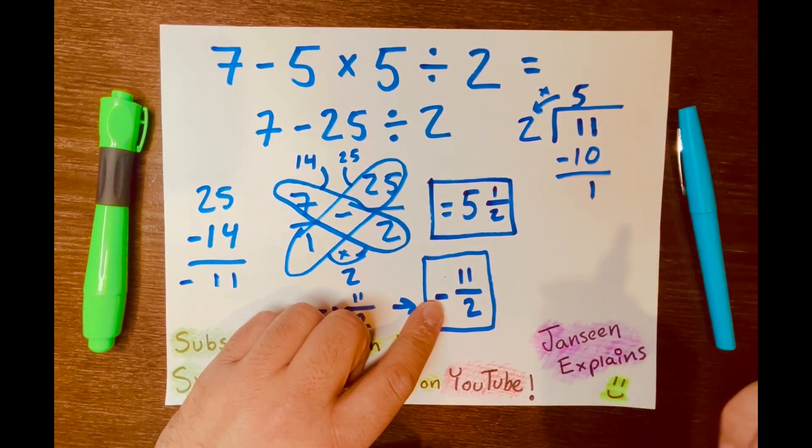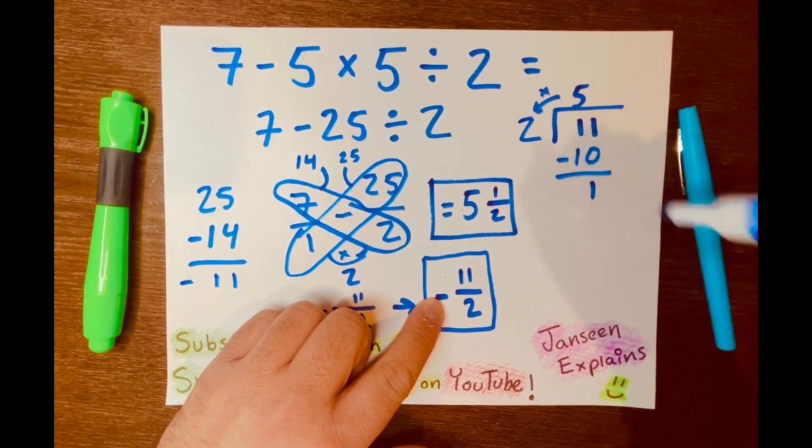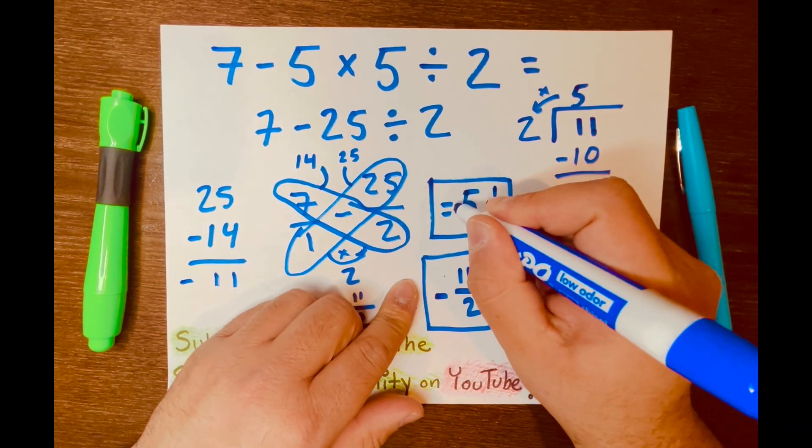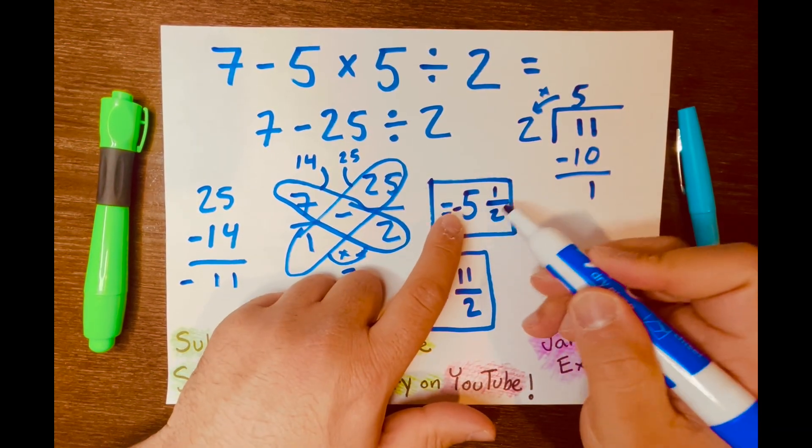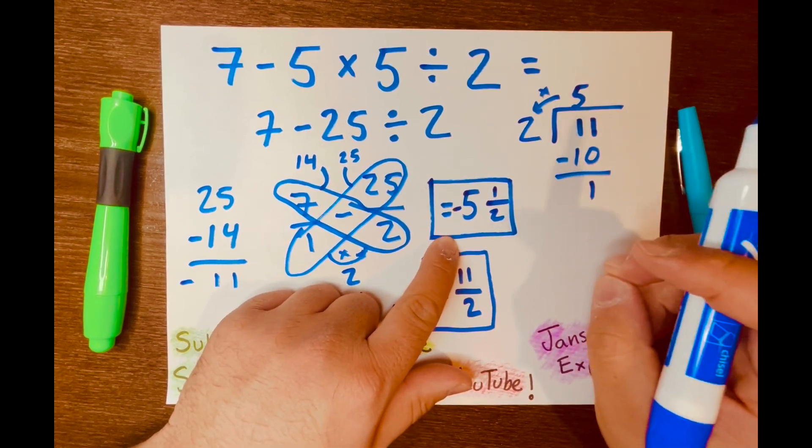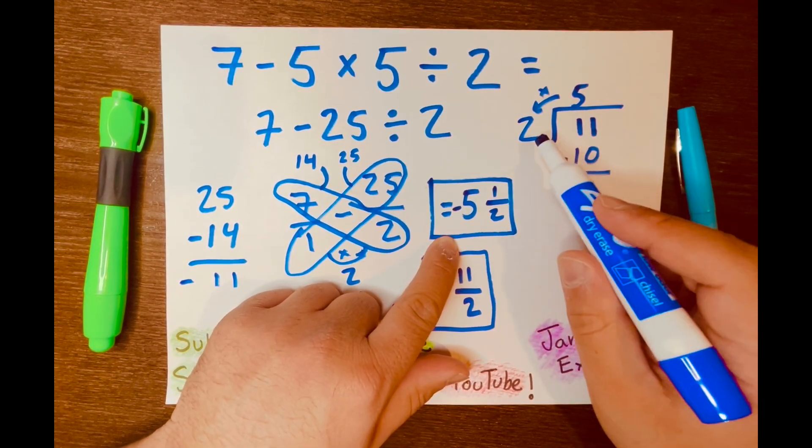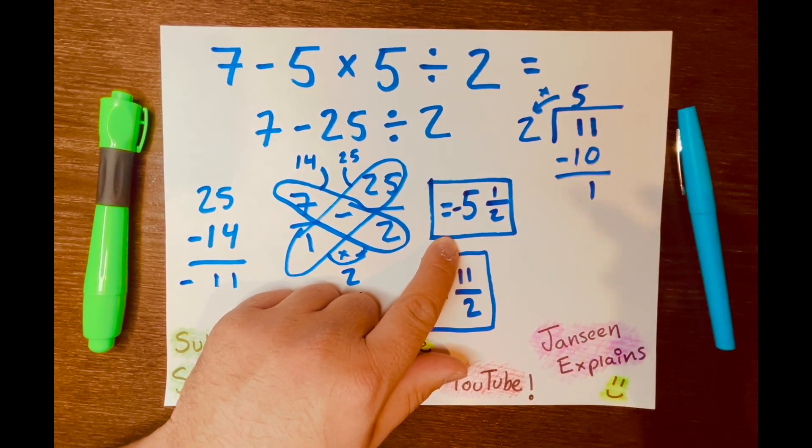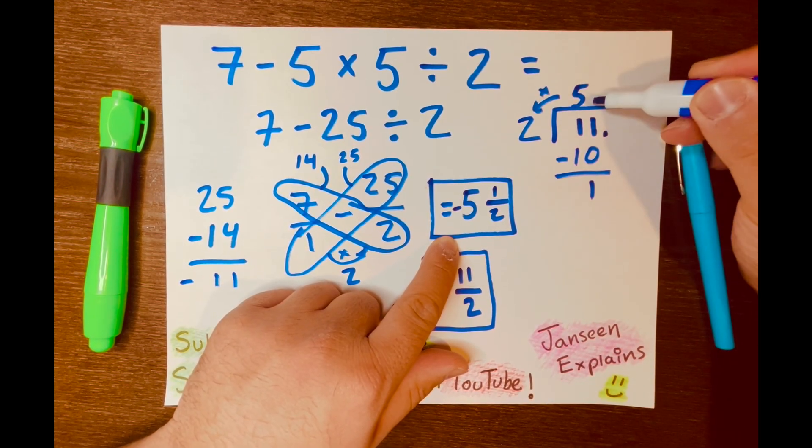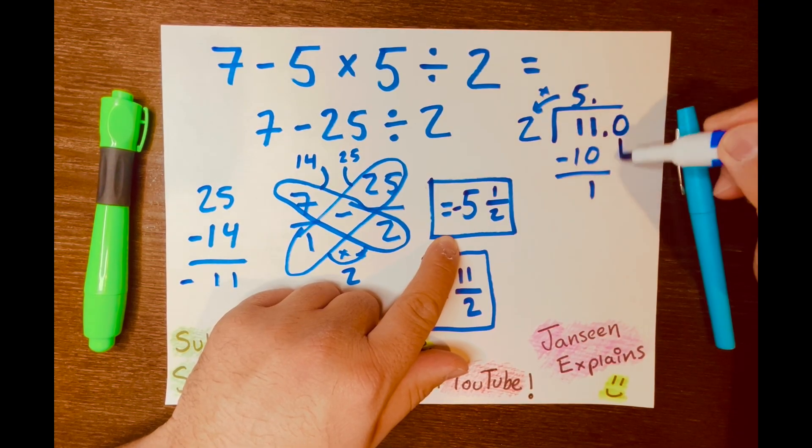Let's continue dividing, finish dividing this problem here. We know the answer is going to be negative. Negative 5, 1 over 2. So our decimal answer is going to be negative 5.5. But let's finish the long division here. How many times can 2 fit into 1? You cannot. So I draw a decimal after the 11 and a decimal after the 5. Write a 0. Bring down the 0.